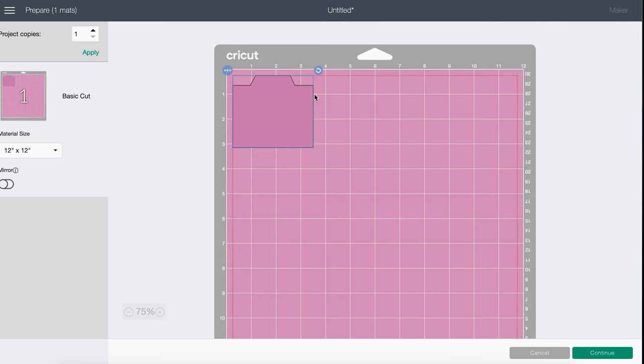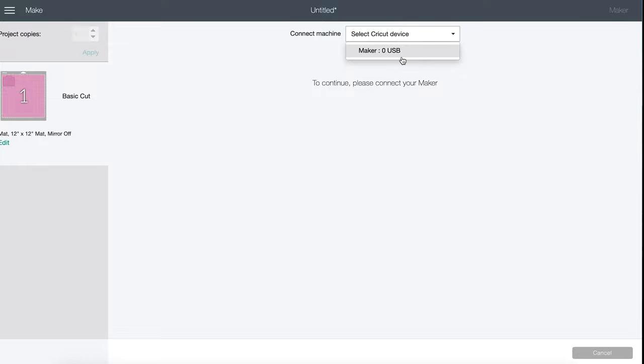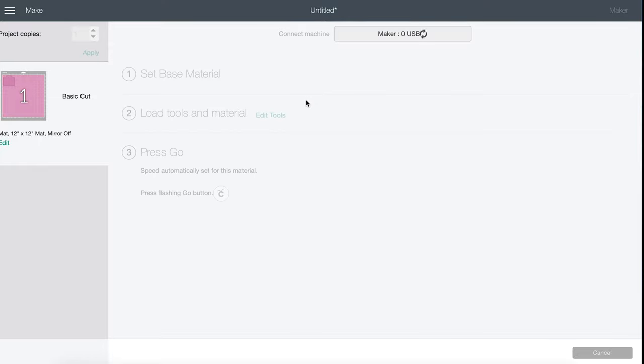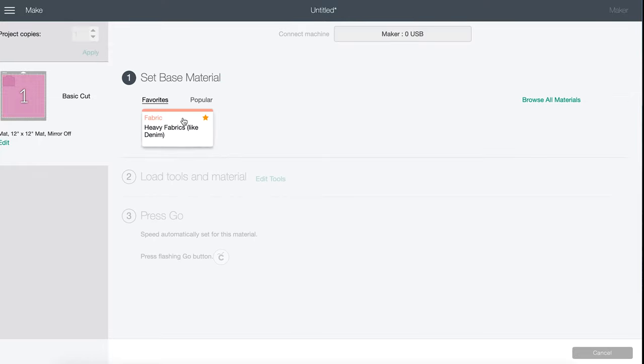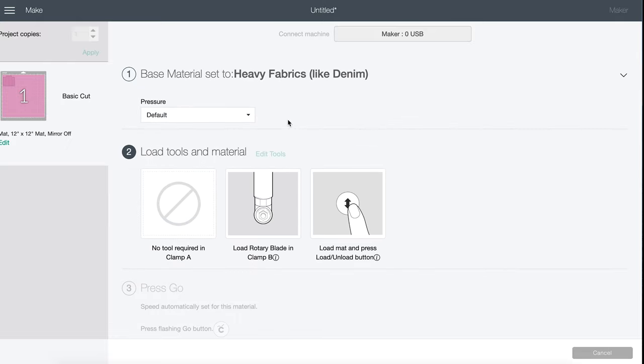Here you can see it's positioned in the corner. You can move that around however you like, but I'm going to leave that. Then I'm going to go to Continue. Now select your machine from the drop down menu and select the fabric you want to use. It's already been preselected for Heavy Fabrics.